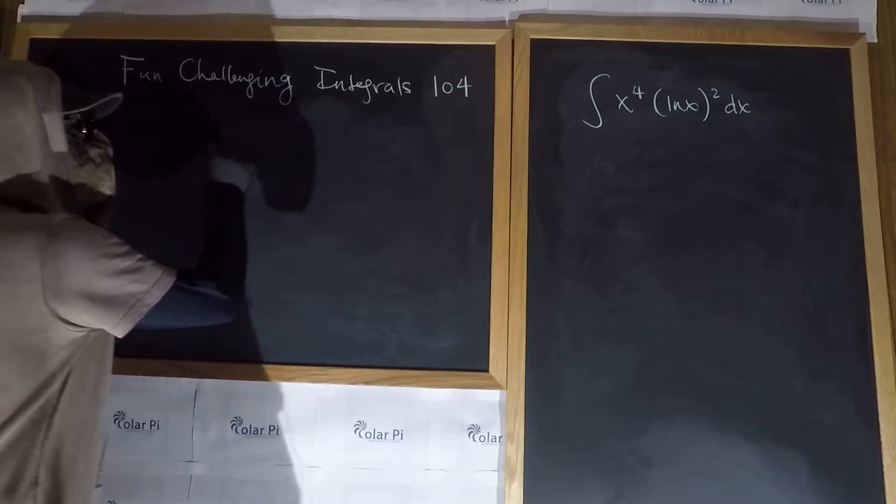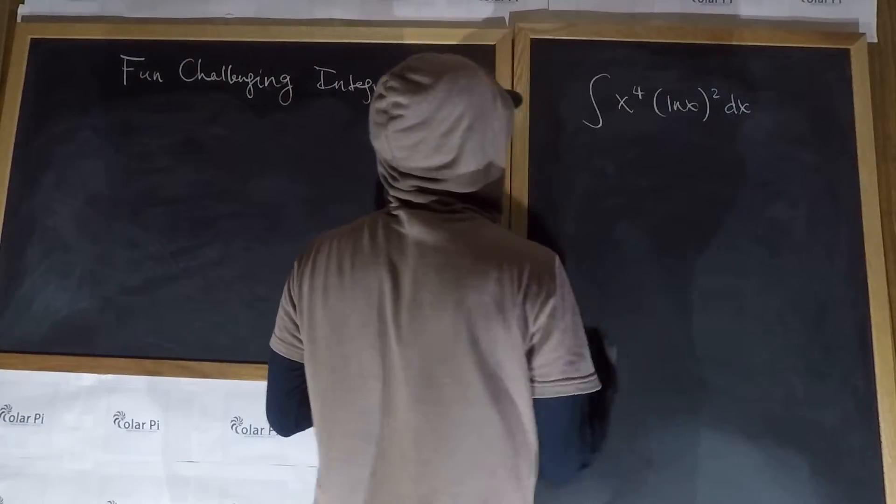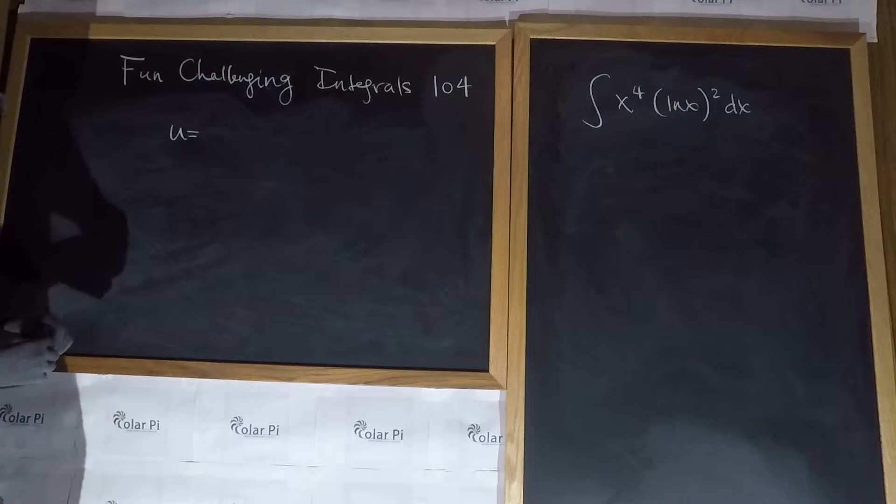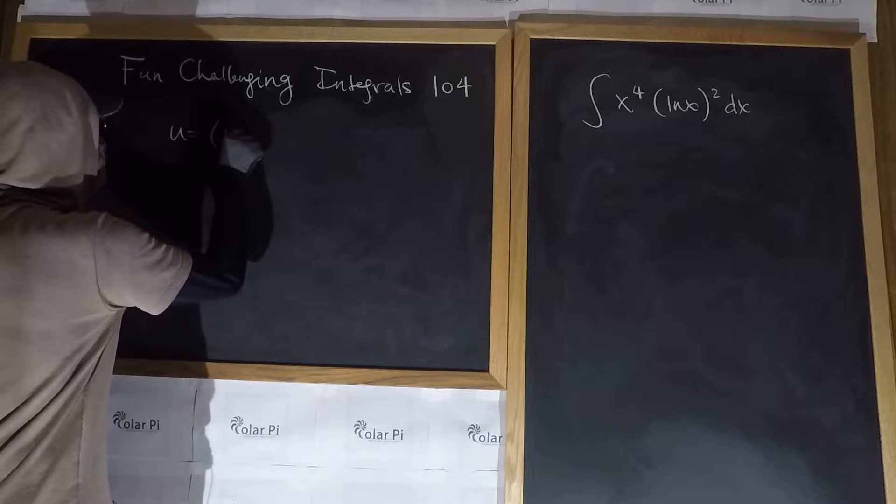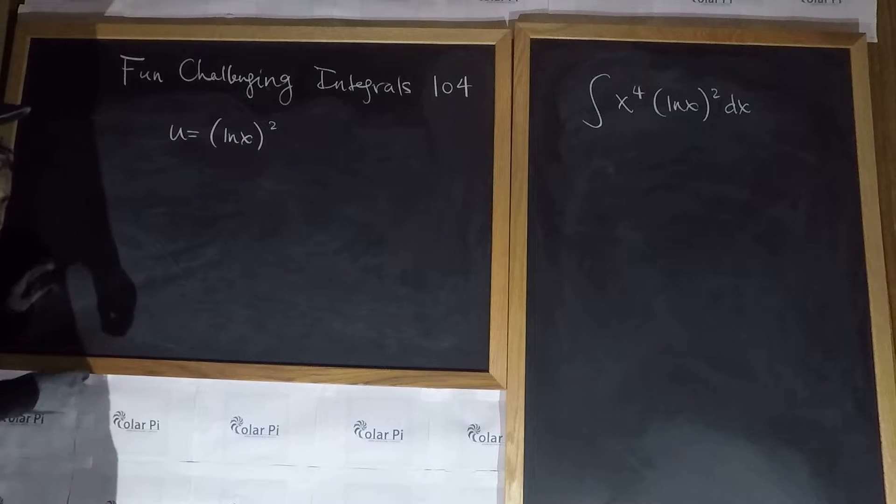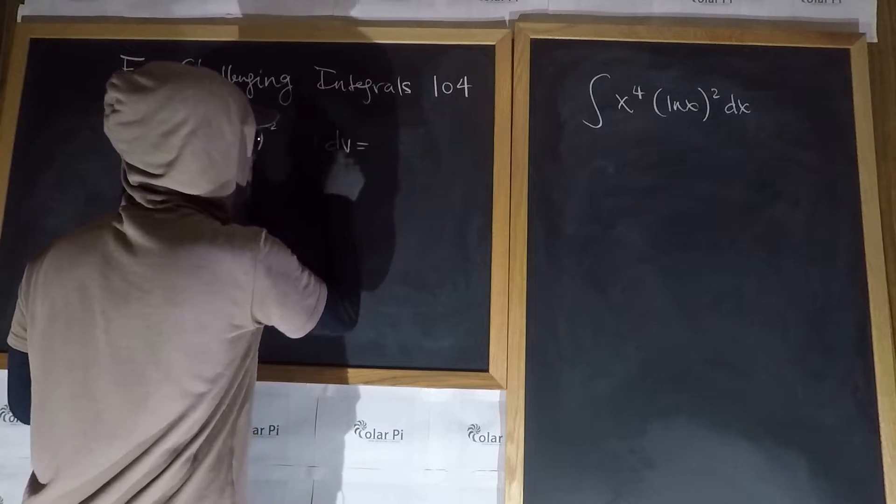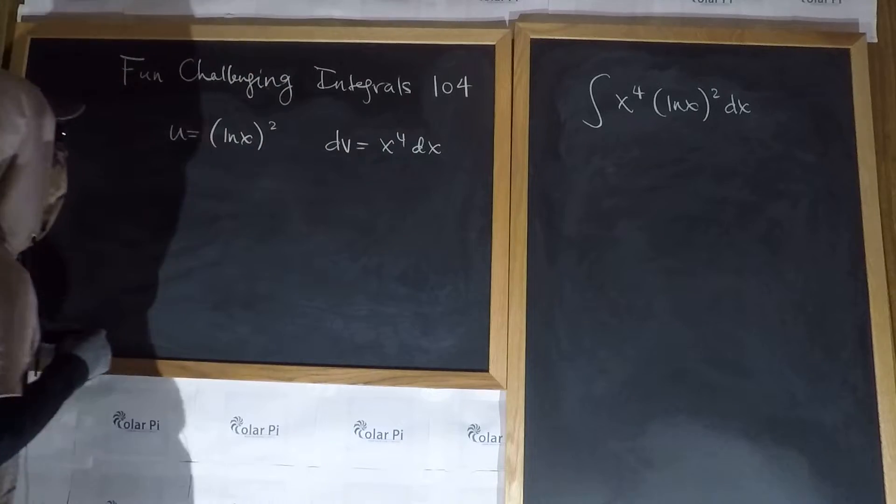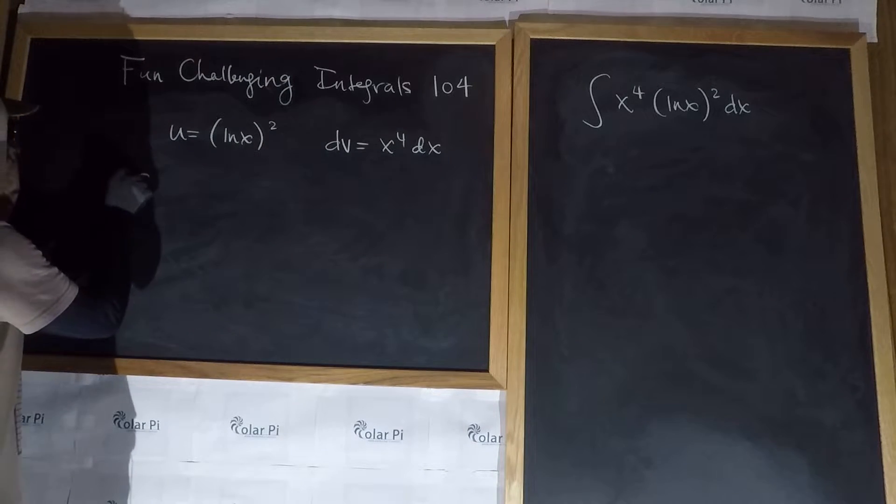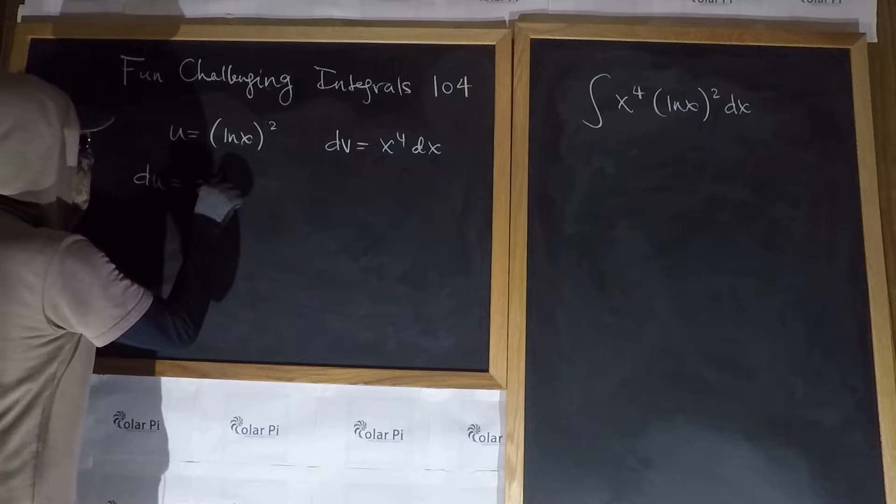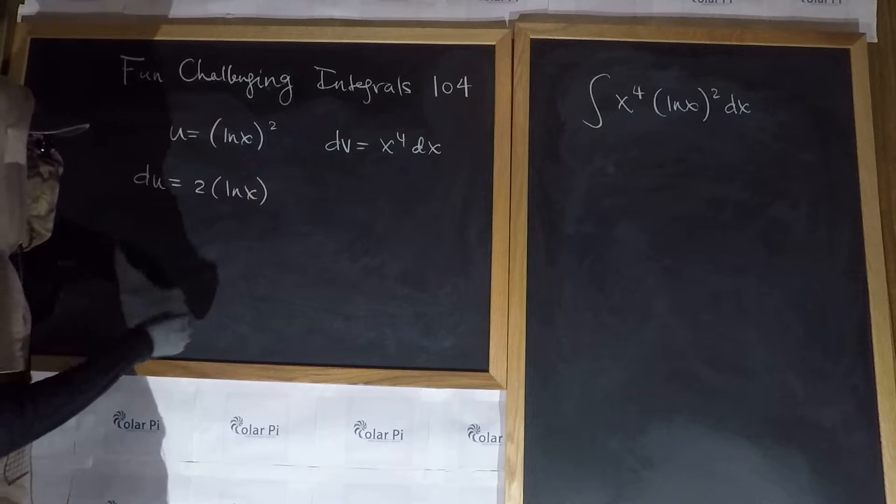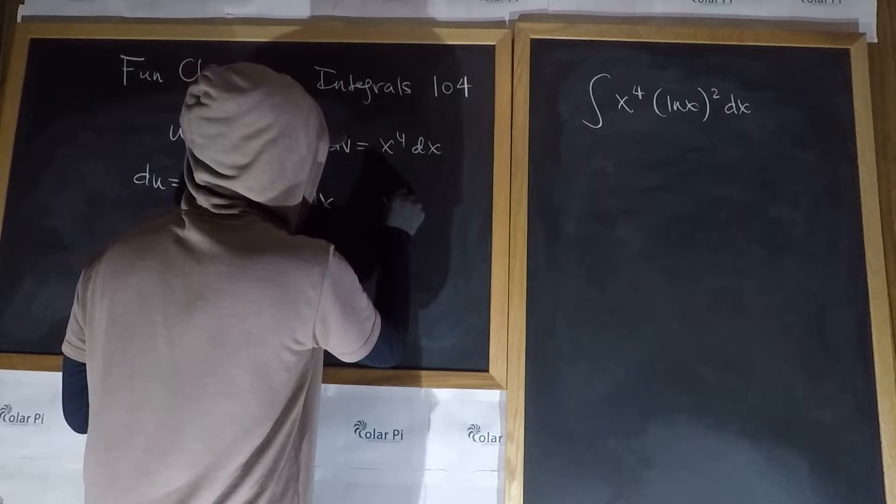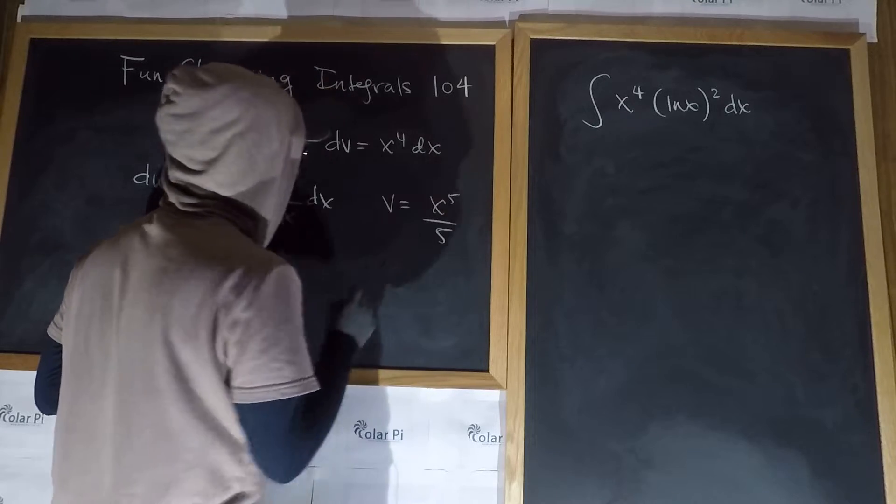So to start, let's do integration by parts and actually in the middle too, as you'll see. For that, we're claiming that this integral is in the form integral of u dv, right? So we need to pick a u, and let's let u equal ln of x squared, and then that means dv is equal to x to the fourth dx. So du is equal to two times ln of x, and then chain rule, one over x dx, and then v is equal to x to the fifth divided by five.